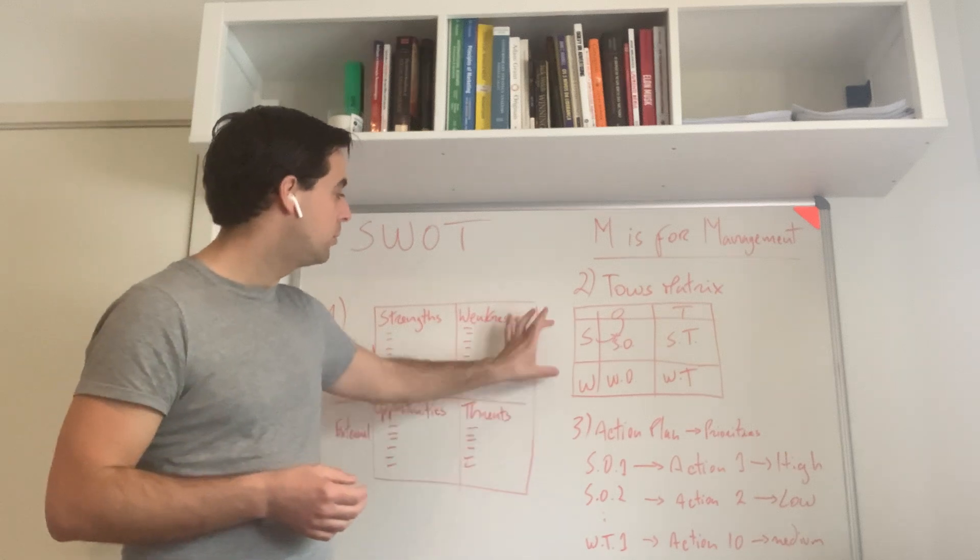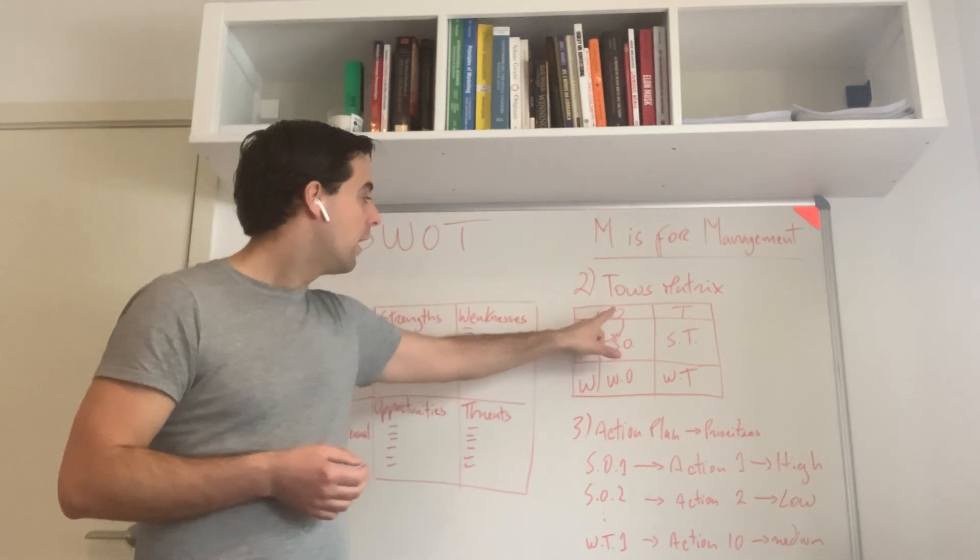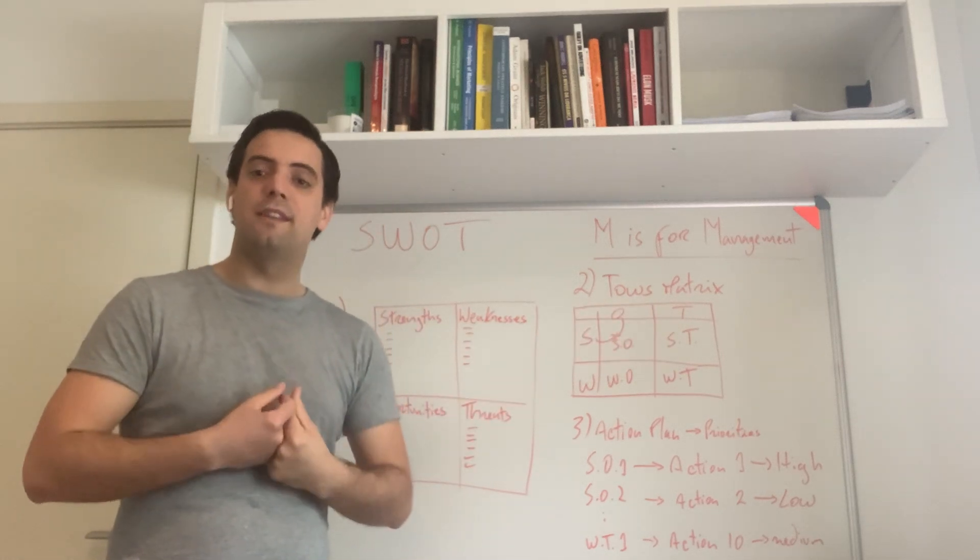What we do is put the internal parts - strengths and weaknesses - here on the columns, and then opportunities and threats, and we start to relate them.